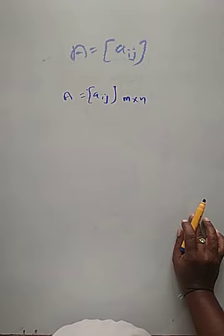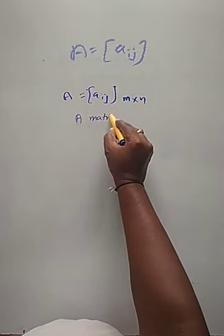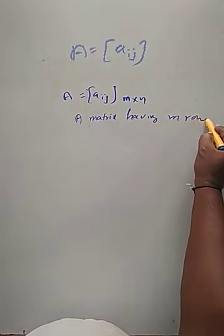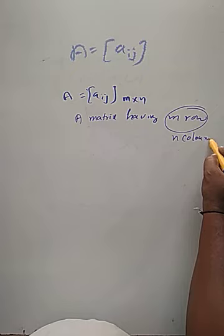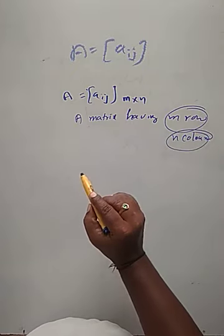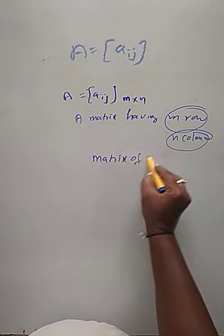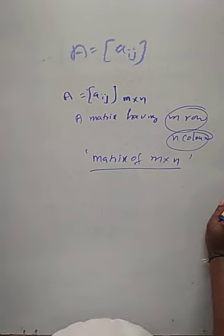A matrix having m rows and n columns is called a matrix of order m cross n. The climax of the definition is very important. The correct definition: a matrix of order m cross n. Every word is important in the definition.